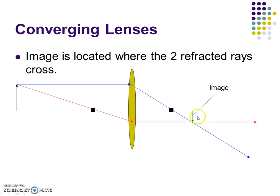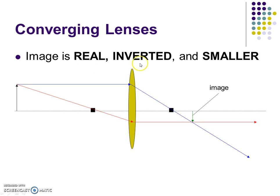The image is located where the two refracted rays cross. Here's one refracted ray, here's the other one — where these two cross, that's where the image is located. Since they cross below the principal axis, the image is upside down. We know it's inverted, and in this case it's smaller because the green arrow is smaller than the black object arrow. For lenses, when the image is on the opposite side of the lens from the object, that's a real image.